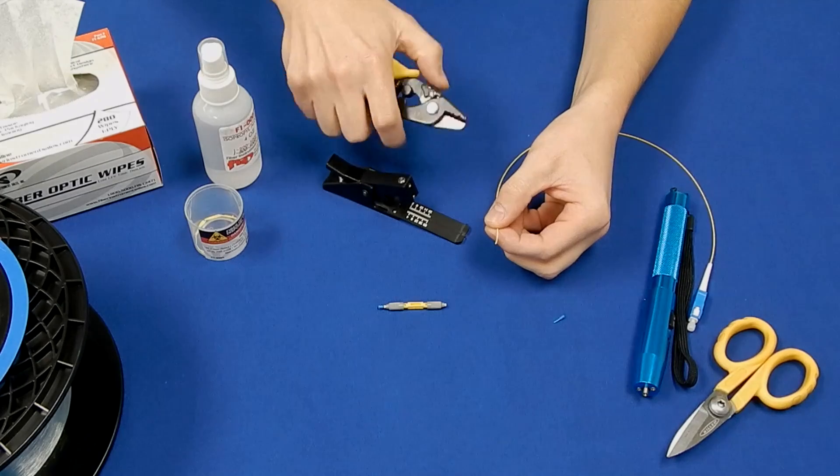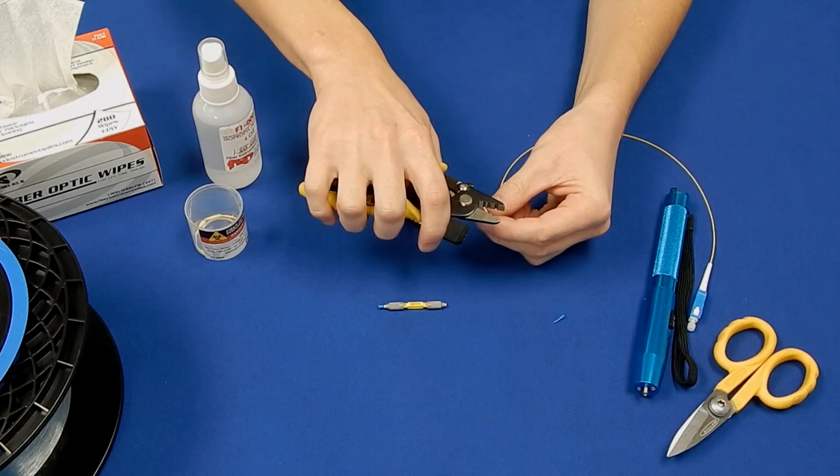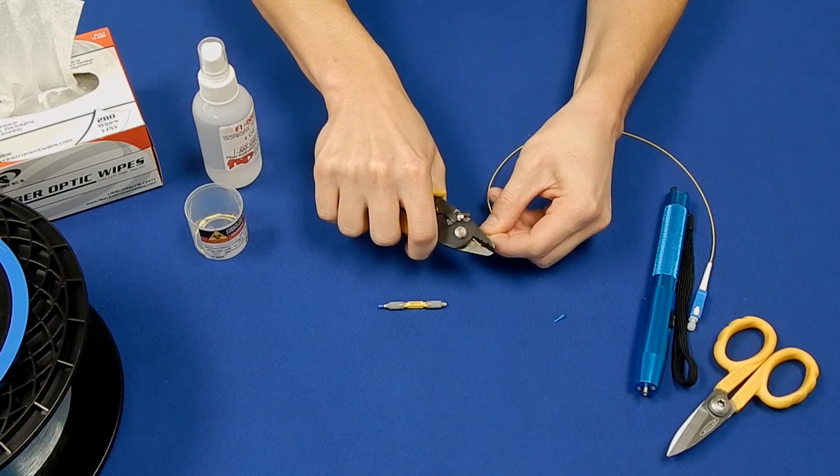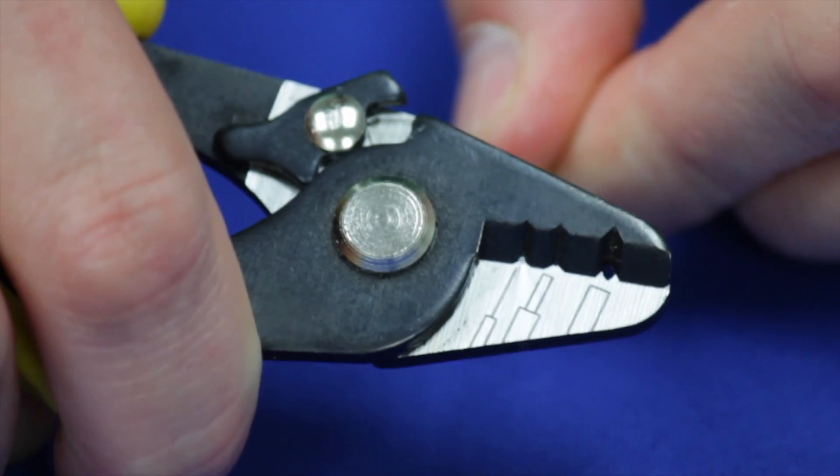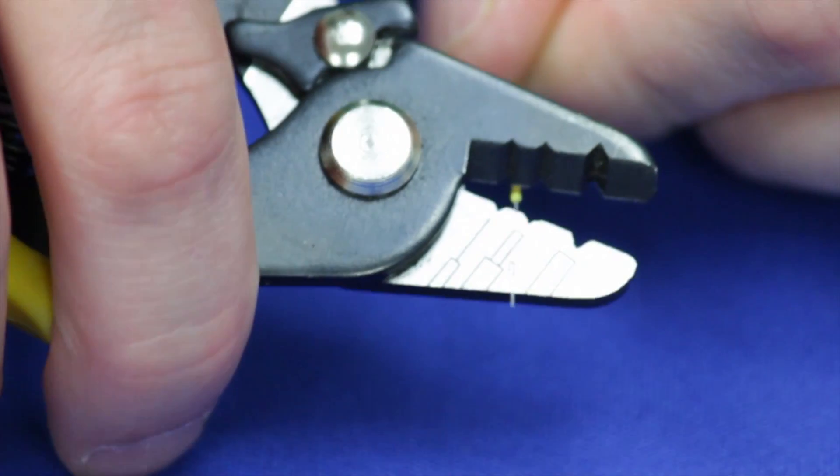Strip an inch to an inch and a half of 900 micron jacket and 250 micron coating from the end of the pigtail. Be sure to remove all of the Acrylite coating from the fiber.